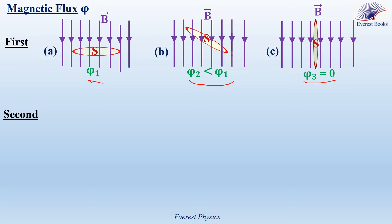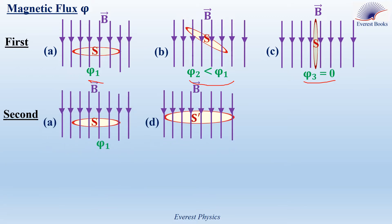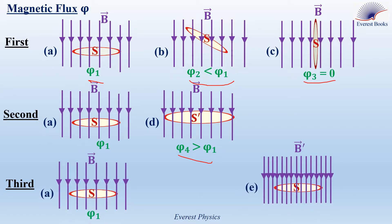Second, we care about the area of the loop. In figure D, we replace the loop of figure A with another loop having a larger area S prime, where S prime is greater than S. More field lines cross this loop at the same angle, so the magnetic flux phi 4 is greater than phi 1. Third, we care about the strength of the magnetic field. In figure E, the loop of figure A is placed in a stronger magnetic field B prime, so phi 5 is greater than phi 1.